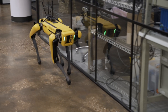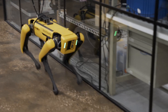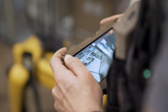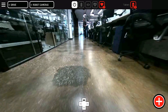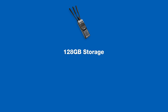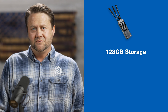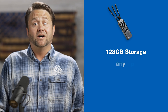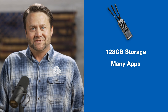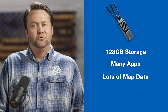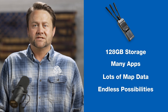Now, by moving our joystick around, we can begin driving Spot around our office and see the live feed from Spot's cameras. It's really that simple. With 128 gigabytes of storage space built into every MPU5, you could load a lot of apps, store a lot of map data, and really make use of the computer system.